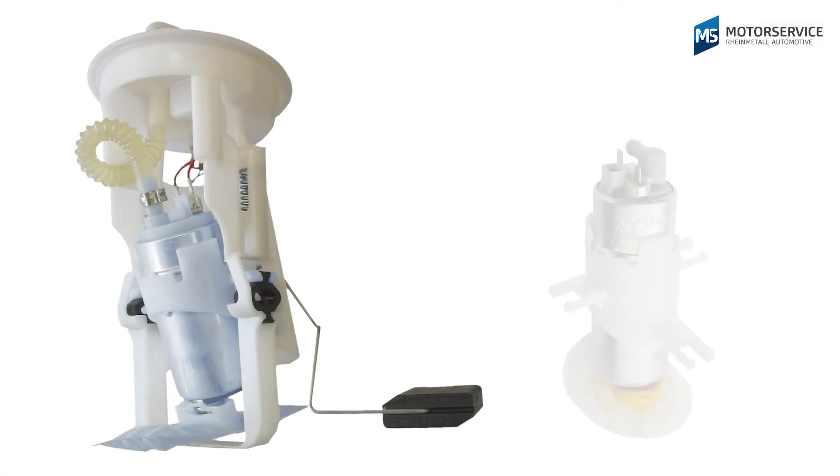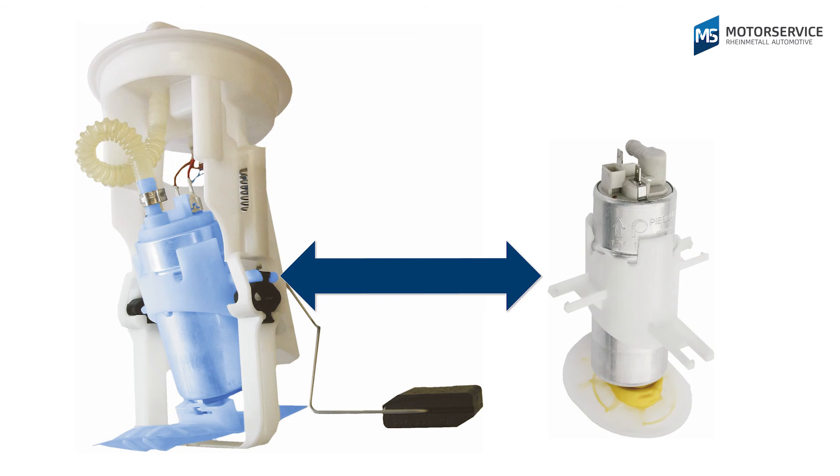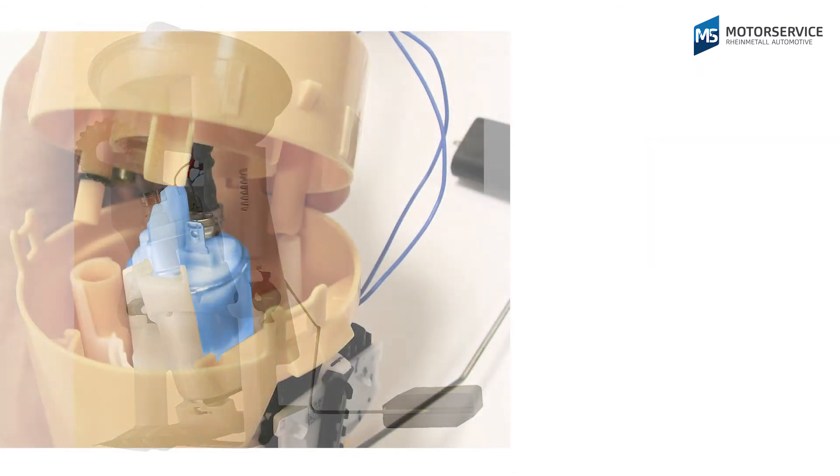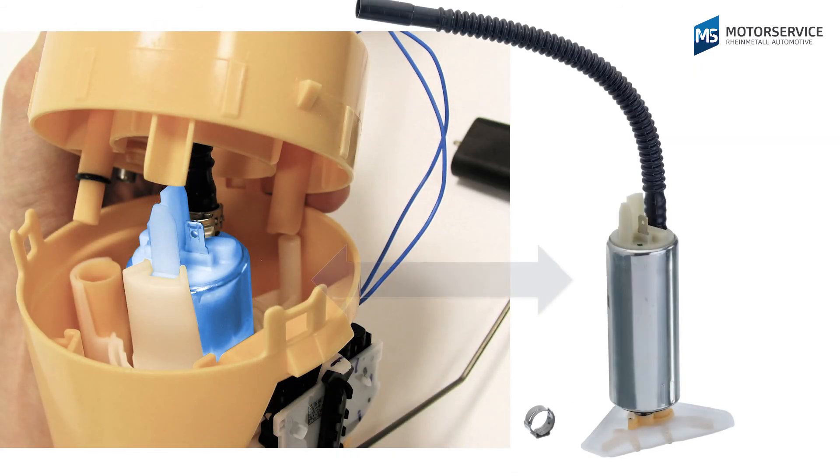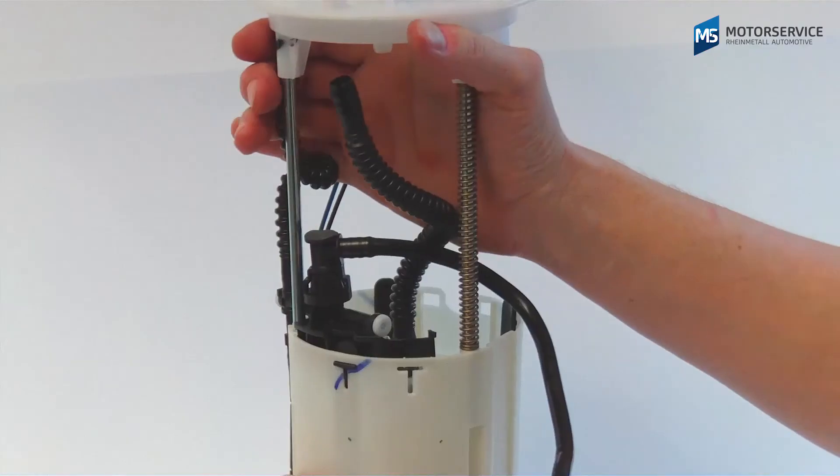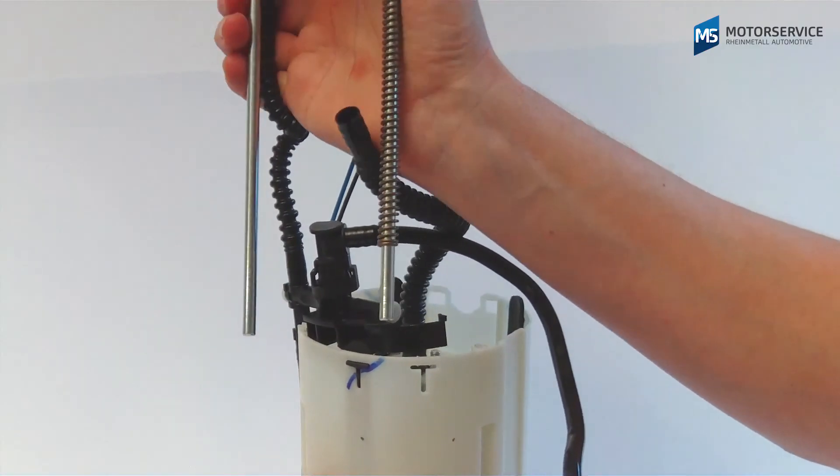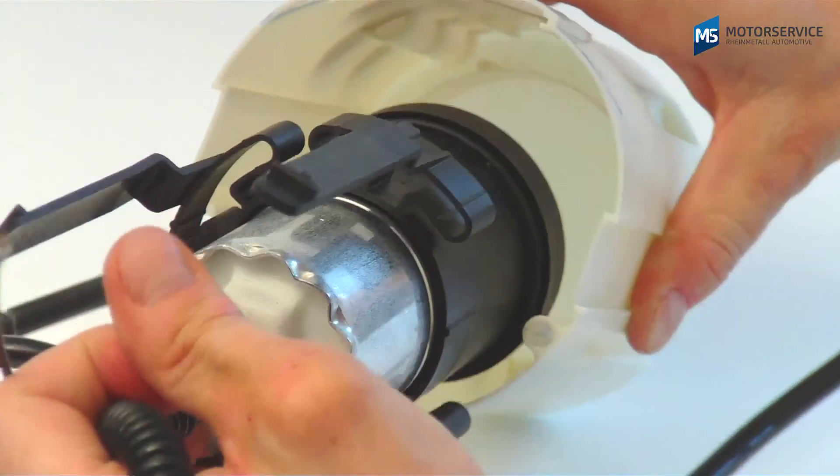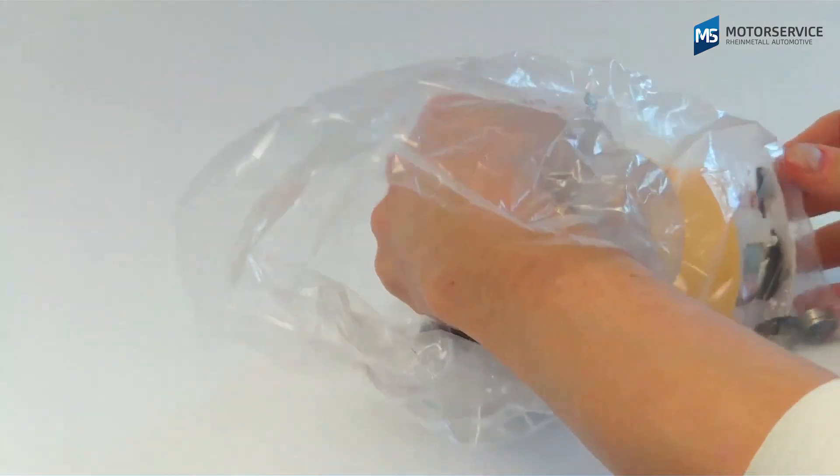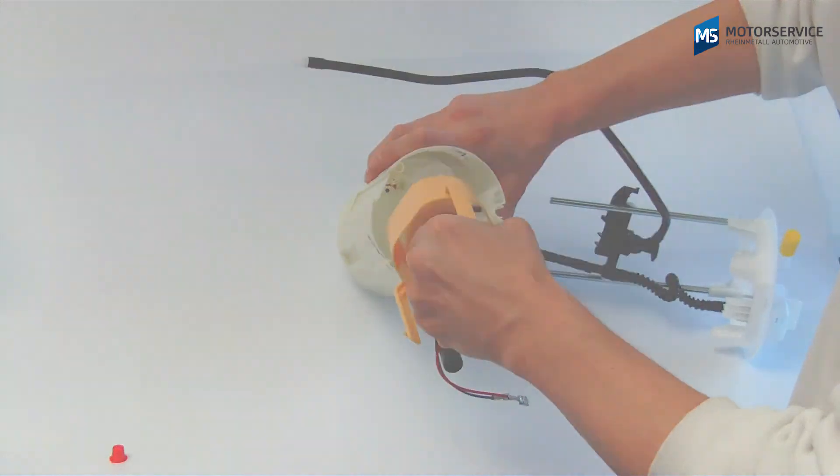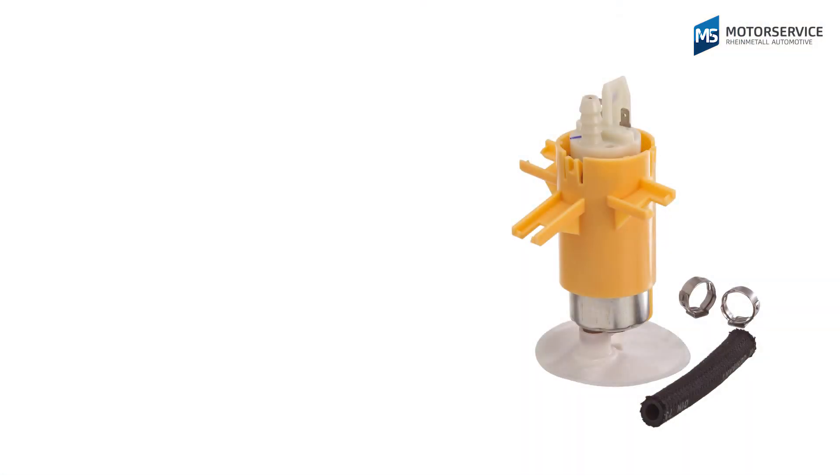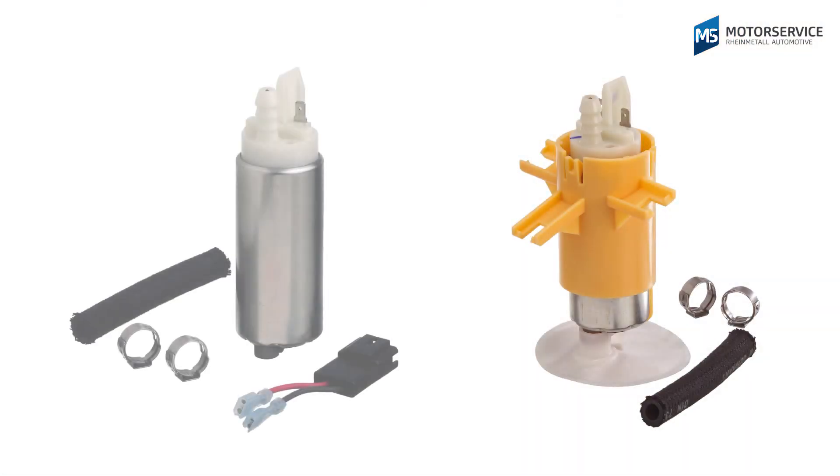Motor Service offers spare parts sets for replacing the fuel pump in the fuel delivery module for a range of vehicles. This means that attachments such as fluid level sensors, flange covers or swirl pots that are usually still okay can continue to be used. The spare parts kits contain the right fuel pump in addition to the required attachments, such as hose clamps, pieces of tubing, etc.